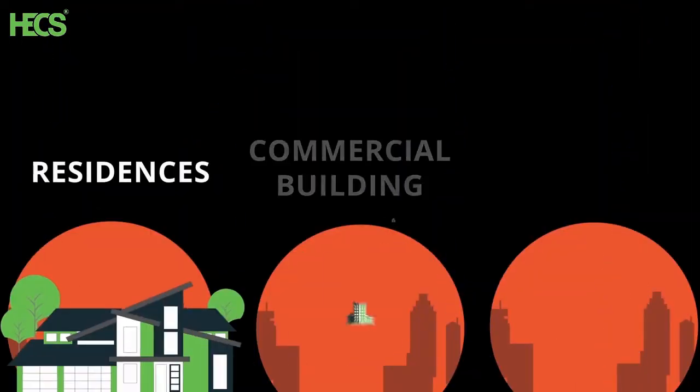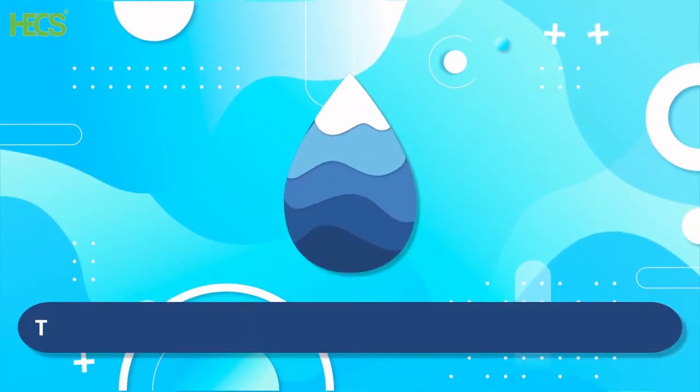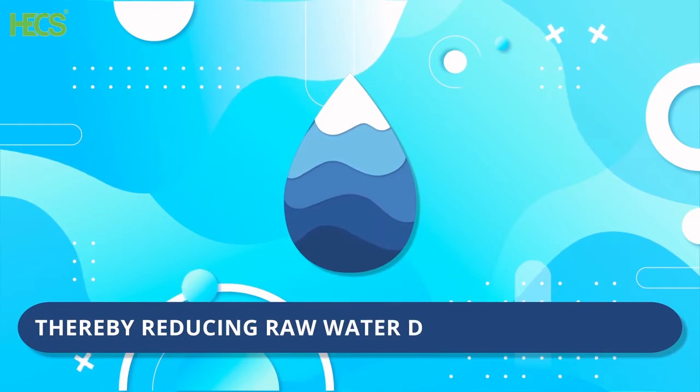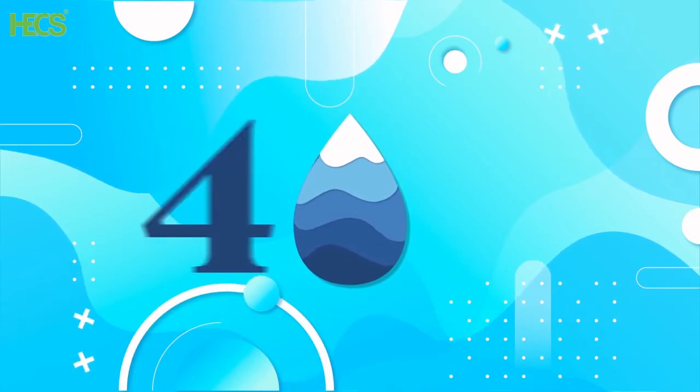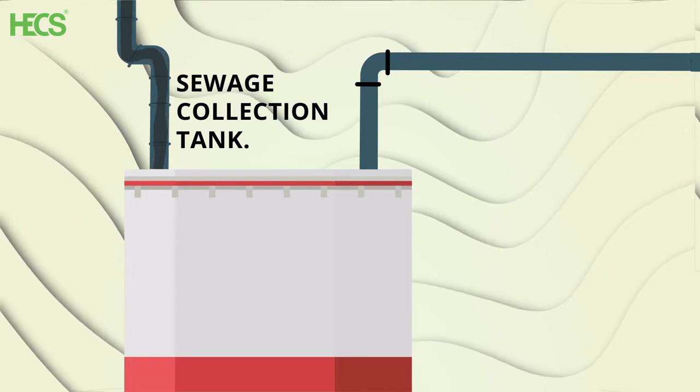These units are suitable for residences, commercial buildings and industries and can help reuse sewage, thereby reducing raw water dependency by up to 40%.